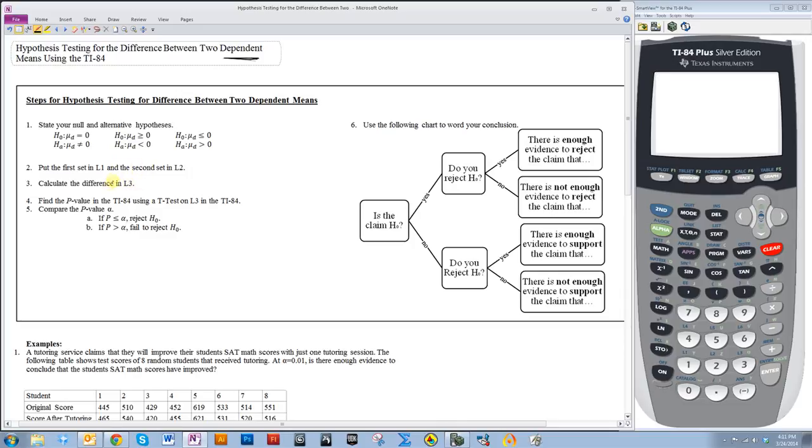You're going to put the two sets in the list section of your calculator and find the difference between the two. Then you will use a t-test on that single list that represents the difference. Then you'll find your p-value using that t-test and compare it to alpha to determine if you're going to reject or fail to reject H0. Then you will use the following chart to determine how you're going to word your final answer.